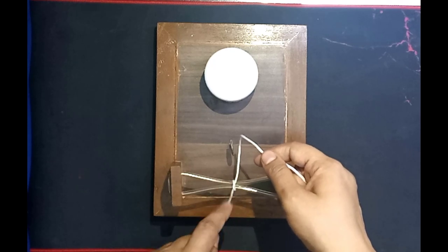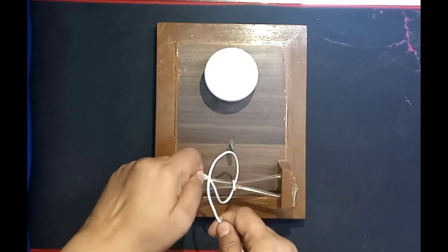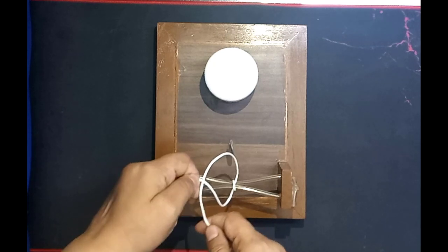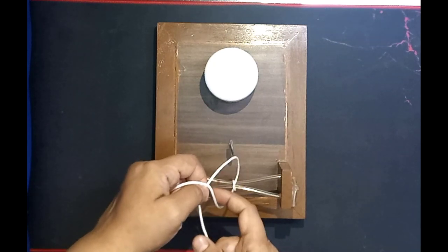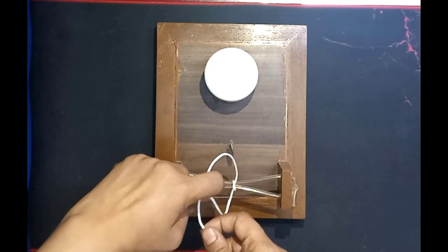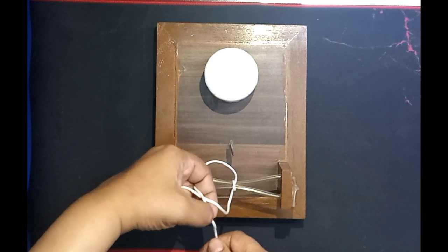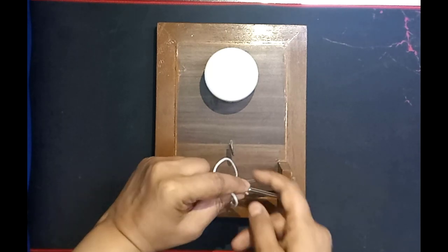Now what you have to do, you have to make cross again. Now you can see by making this cross there is creation of another loop. So in this loop you have to pass your index finger like this, put the string over this index finger.